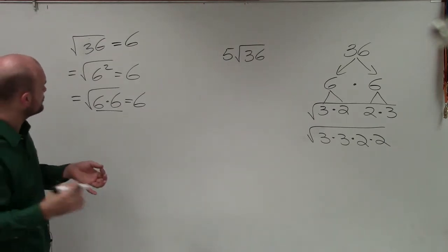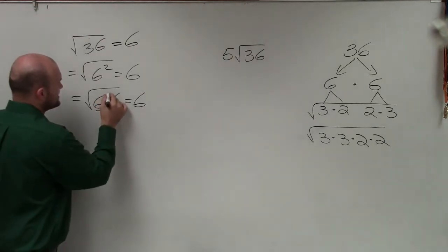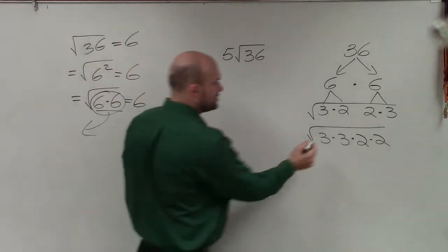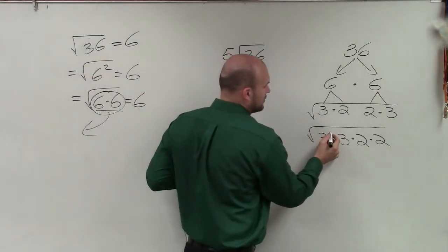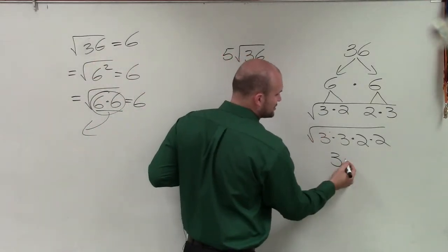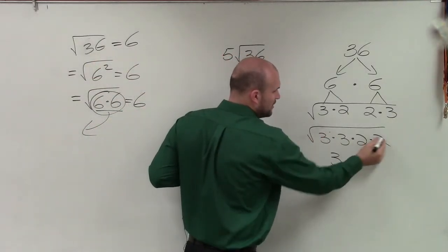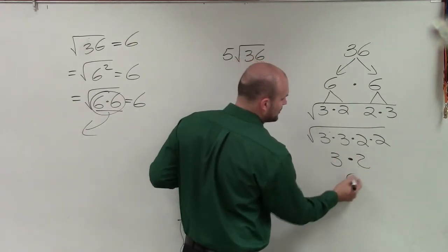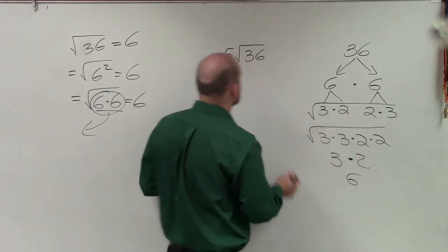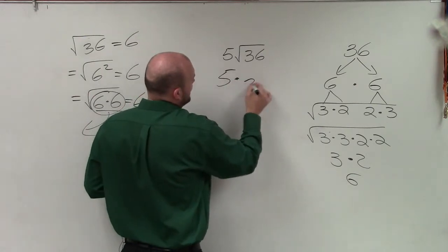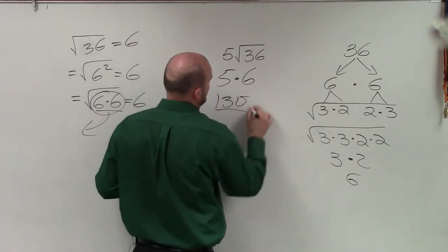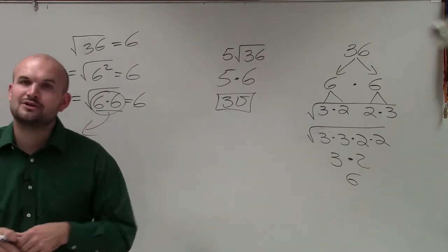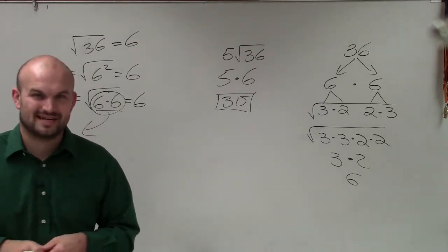When taking the square root, we're basically pulling out pairs of numbers. The square root of 3 times 3 is just 3. The square root of 2 times 2 is just 2. So I have 3 times 2, which is 6. Now I have 5 times 6, which is 30. So there you go, ladies and gentlemen — that is how you evaluate your expression for taking the square root.